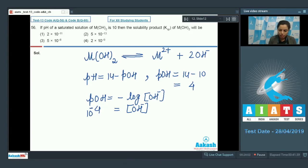On that basis, if this OH⁻ ion concentration is 10 raised to the power minus 4 molar, then on the similar basis, the concentration of M²⁺ ion would be 10 raised to the power minus 4 divided by 2 molar.